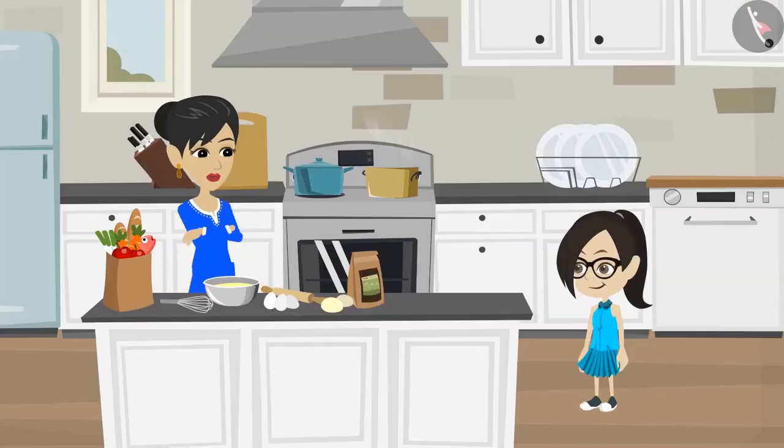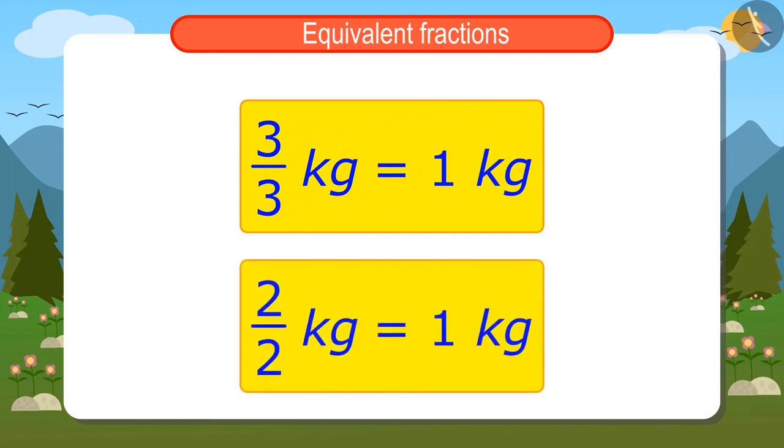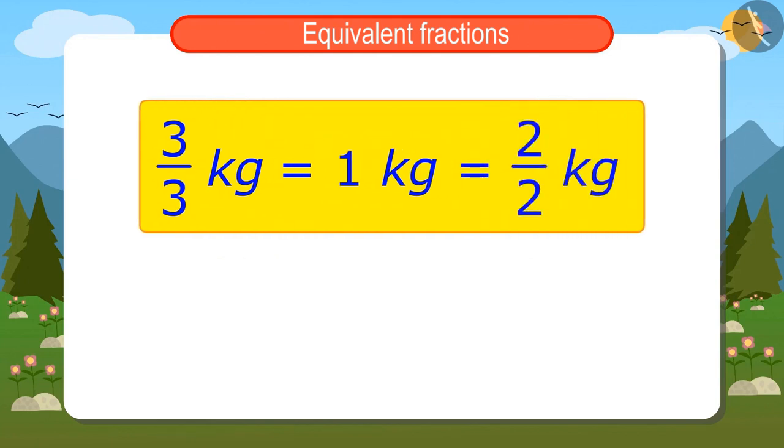Tell me, what do you want to know? Just like 3 upon 3 kilo has 1 kilo of potatoes, I think 2 upon 2 will also have 1 kilo of potatoes. Because by dividing a kilogram into 2 equal parts, both its parts will be written together as 2 upon 2.